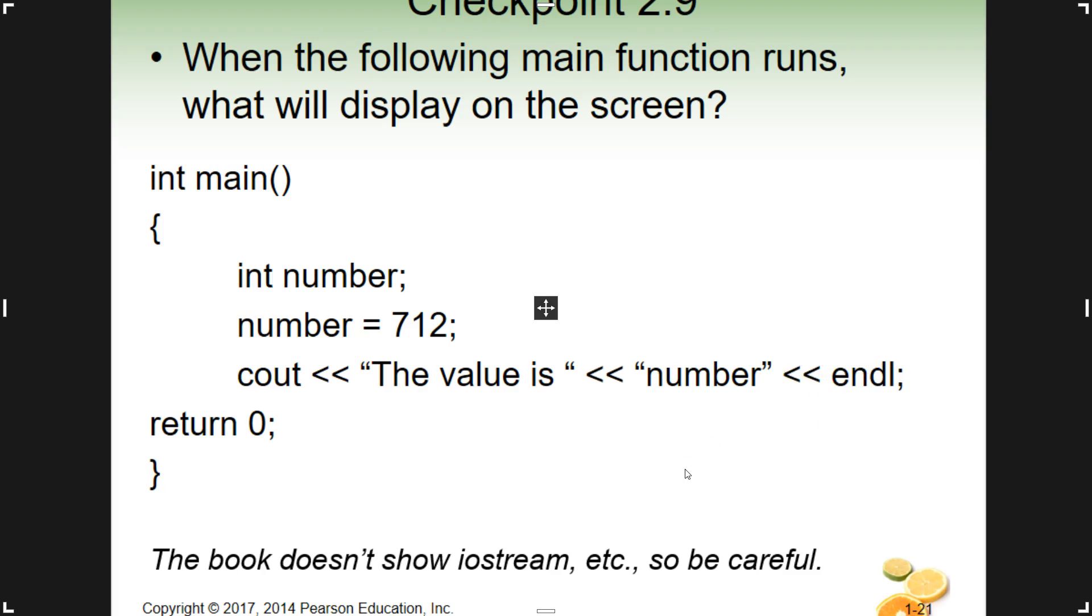If this was going to run, what you would end up seeing is the value is, and then the word number, because there's quotes. So this made it a string. Of course, these quotes are the weird ones. If you copy and paste this over, this isn't going to work. The pretty quotes, and then endl and it'll go down to the next line. So this would just say the value is number and that's it.